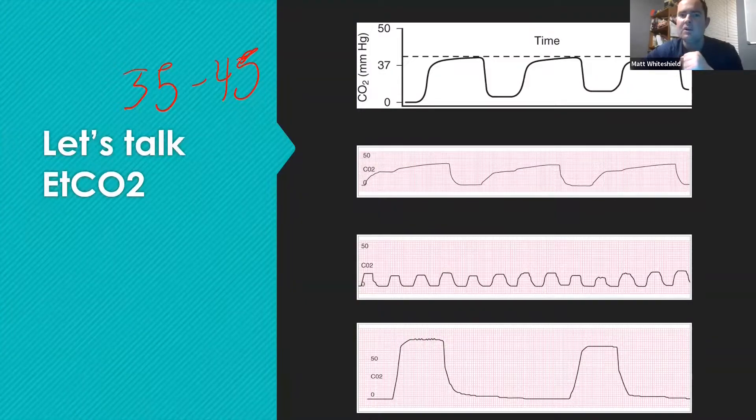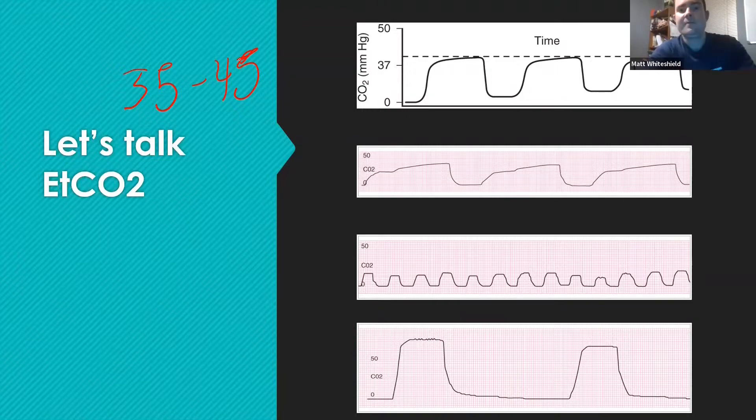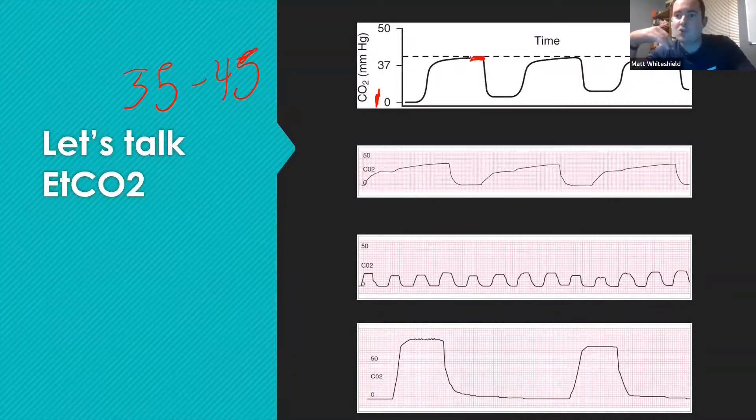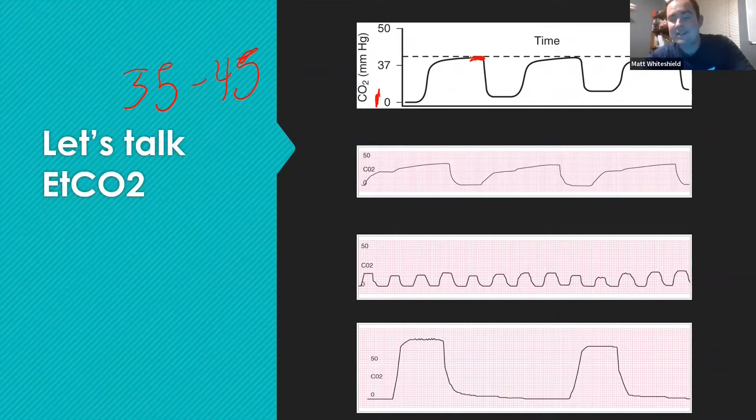If we look at these end-tidal capnography waveforms, we can see where these numbers are on the left side. We have zero, and it's showing the number 37 because that's where that waveform starts to plateau. But it's probably a little bit more than that, probably in the 40-ish, because the end-tidal is where the tallest peak of that actual waveform is.